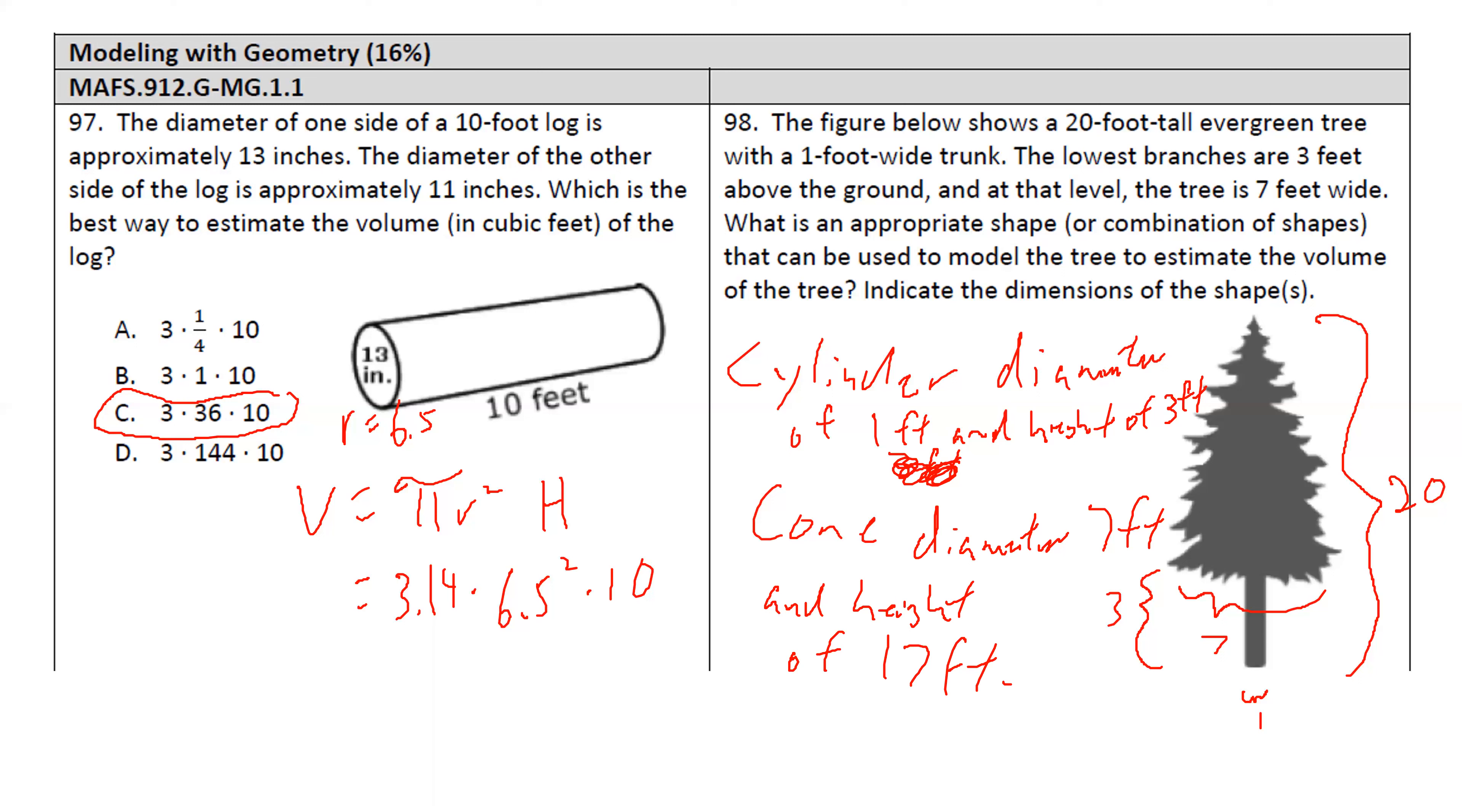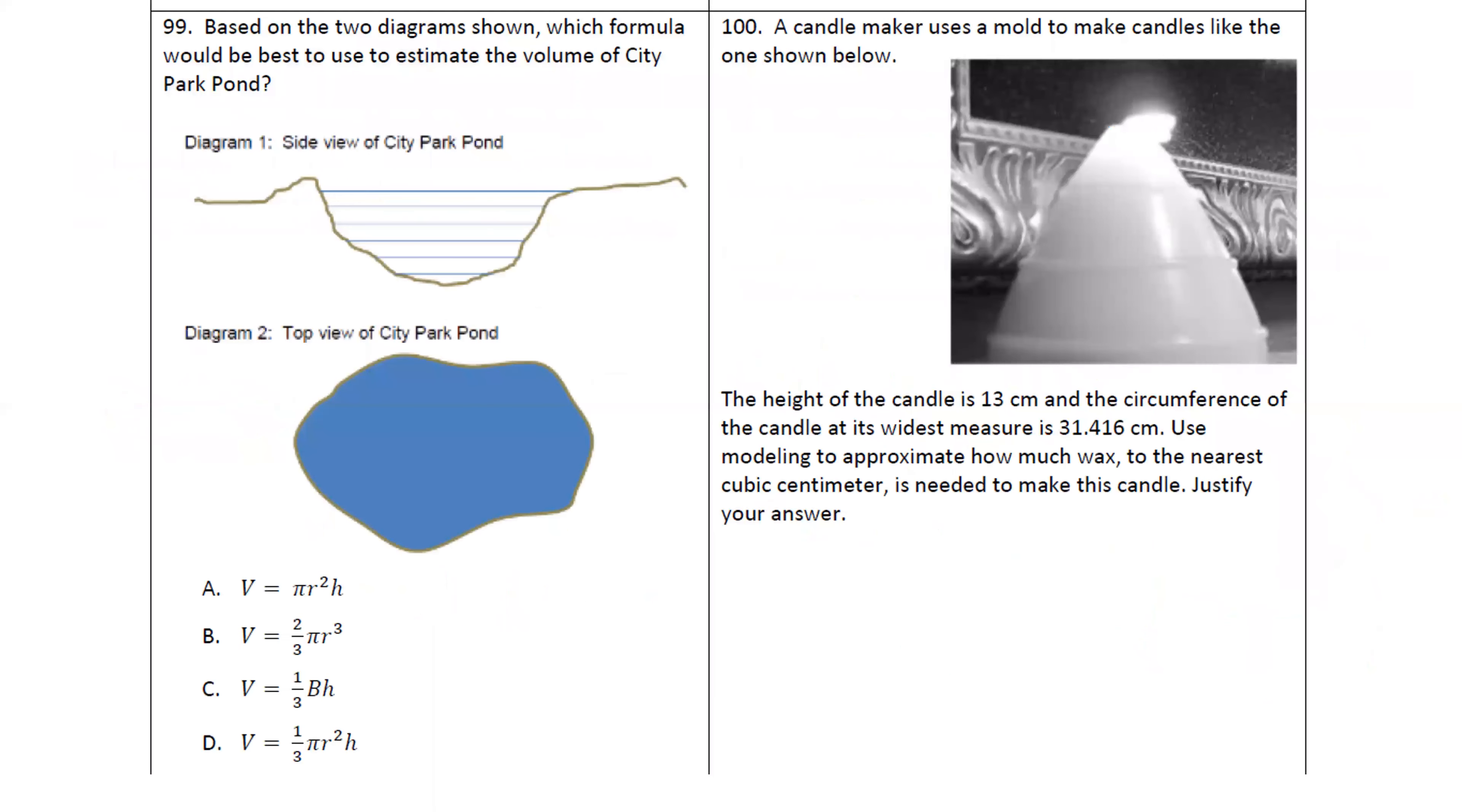That's it. That's all we wanted is an answer. So what two shapes? Describe them and give dimensions. All right, 99. They gave us a pond. They wanted to estimate the volume. What shape do you think it looks closest to? They gave us a side view, which pretty much looks like a half of a circle. The top view, it's a little bit rougher.